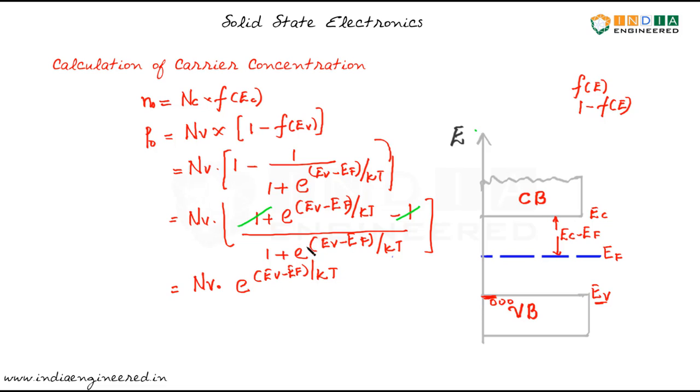If we follow the similar argument, that is if Ef minus Ev is greater than 3 kt or more, we can neglect the e power term which will be really small since Ef minus Ev is greater than 3 kt, and we have e power minus of that, this term will be really small. So we can neglect...